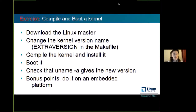Now it's up to you — I'll be giving you small exercises from time to time. You can stop now and do the exercise, or note it down and do it a little bit later. Download the kernel, change the version name — a small version you can see when you run `uname -a`, found in the `EXTRAVERSION` in the kernel Makefile — then compile it, install it, boot it. When you come back, check if the new name is there. If you can do it on an embedded platform, it's even more interesting.